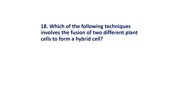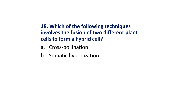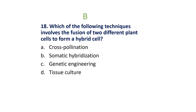MCQ 18: Which of the following techniques involves the fusion of two different plant cells to form a hybrid cell? Options are: Cross pollination; Somatic hybridization; Genetic engineering; Tissue culture. The correct answer is Option B: Somatic hybridization.